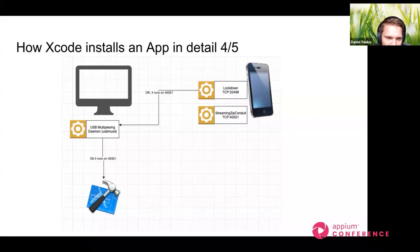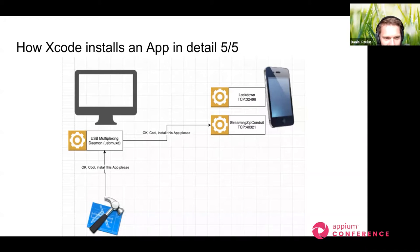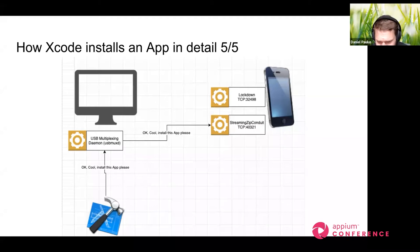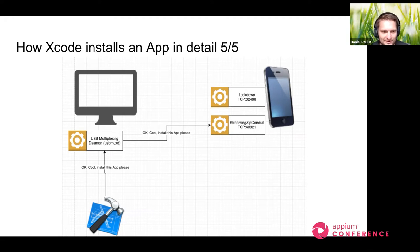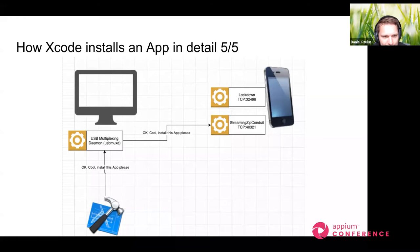Lockdown says the service runs on port 4321 — a number I completely made up; those are random ports. Xcode then connects to the daemon again and says: please connect me to TCP port 4321. It gets a regular network connection piped through to the app installation service, called Streaming Zip Conduit. This is basically how every interaction works — whether it's Apple Configurator, Accessibility Inspector, or any tool interfacing with iOS devices through USB. They all connect to usbmuxd, connect to Lockdown, ask Lockdown to start a specific service, get the port back, and start communicating.